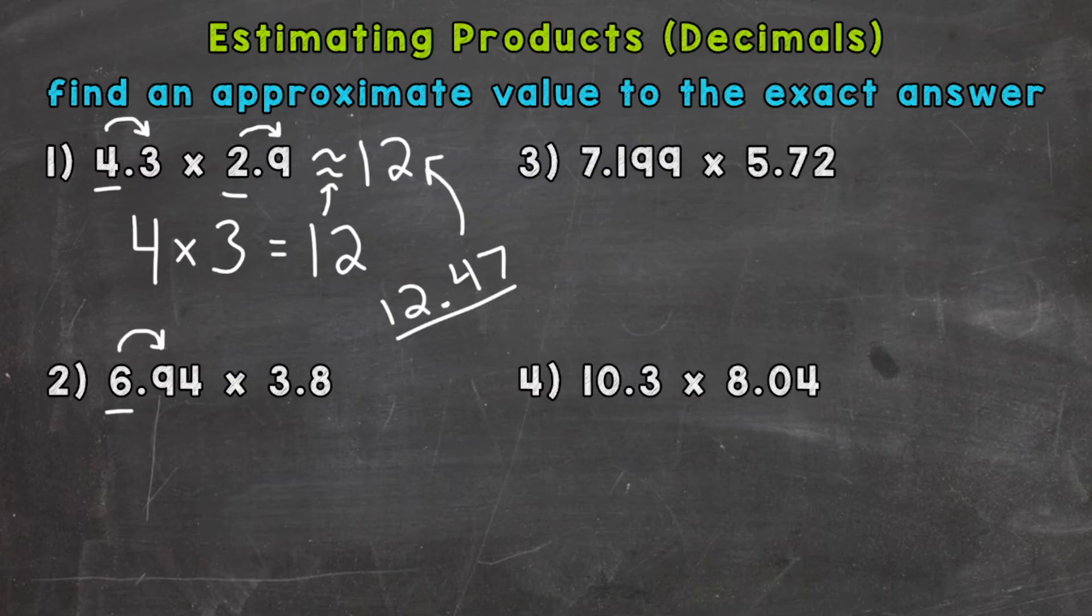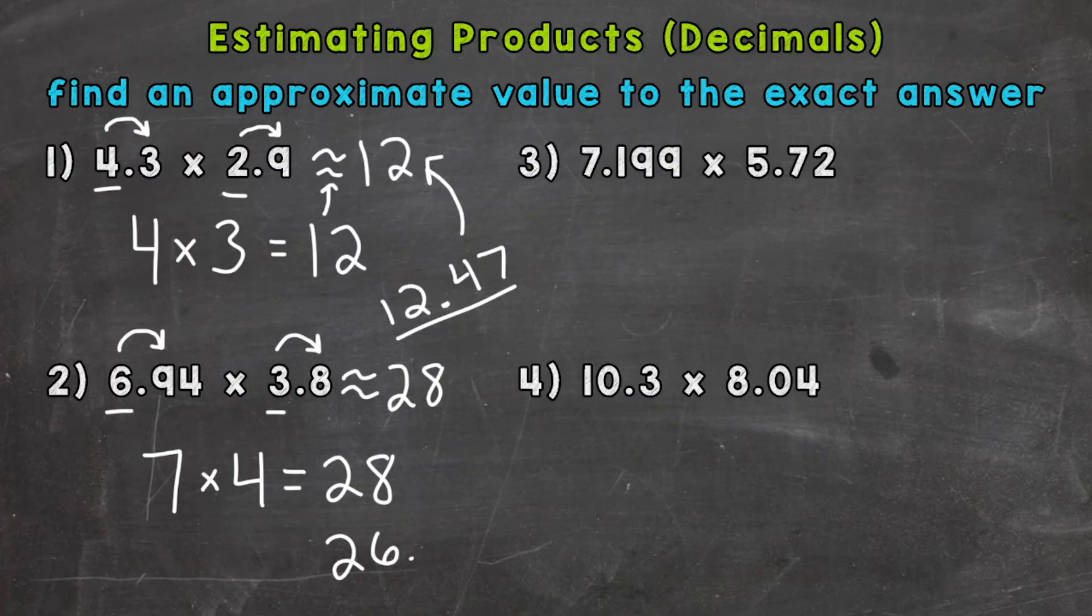And this is going to round to 7. 6.94 is closer to 7 than it is to 6, times 3.8 is going to round to 4. So we can do 7 times 4 equals 28, and that's going to be our estimate.